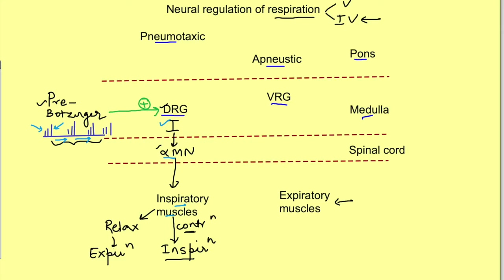Sometimes we need to increase the depth of respiration — for example, when talking we take deep inspiration and there is prolonged expiration. Involuntarily too, there are various instances where rate and depth of respiration change, such as during exercise, fear, and anxiety, and there are certain reflexes as well. This means the pre-Bötzinger complex and the dorsal respiratory group inspiratory neurons alone are not sufficient, so we have other levels of control.